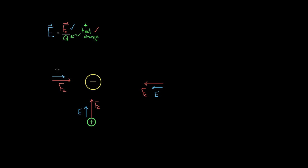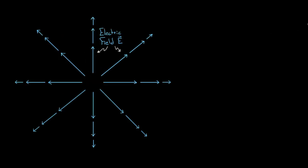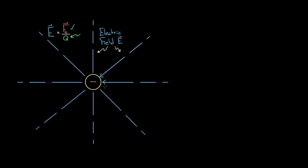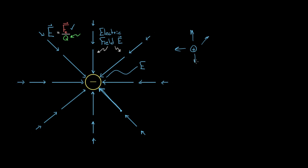The electric field created by a negative charge points radially inward toward that negative charge. A positive charge created a field pointing radially away, because it always repelled the positive test charge. But a negative charge creates an electric field pointing radially inward, because it's always attracting a positive test charge. So the electric field from a negative charge at any point in space points toward that negative charge.